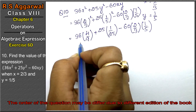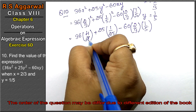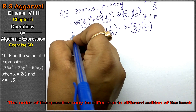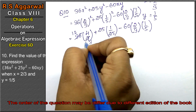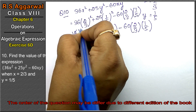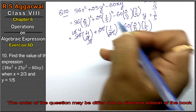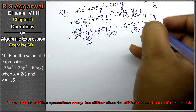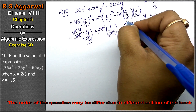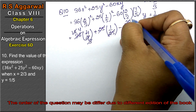Simplifying: 36 × 4/9 — here 9 cancels into 36 giving 4, so we get 4 × 4 = 16. Then 25 × 1/25 — 25 cancels, giving 1. Then for 60 × 2/3 × 1/5: 3 × 1 = 3, 3 × 2 = 6, 3 × 1 = 3, 3 × 4 = 12; and 5 × 4 = 20.